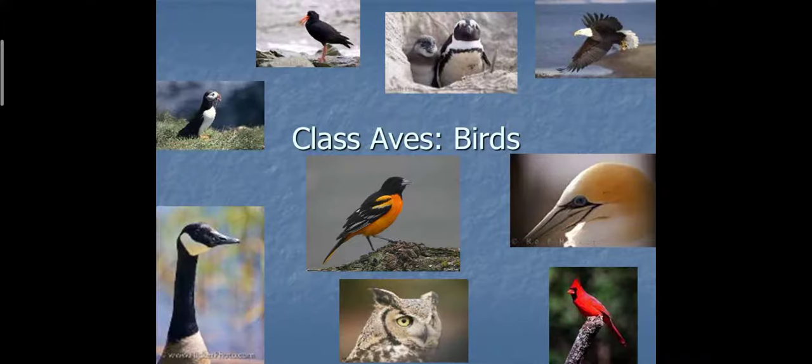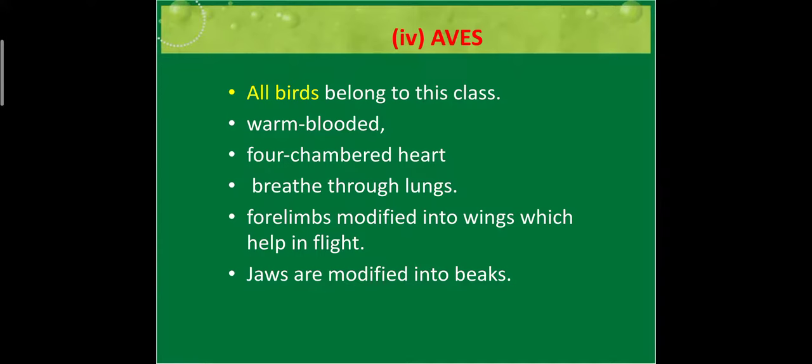Our fourth class is class Aves, or birds — one of the most beautiful classes. All birds belong to this class. They are warm-blooded animals. Their heart is four-chambered. They breathe through lungs. They have four limbs which are modified into wings to help them fly, and their jaws are modified into beaks.